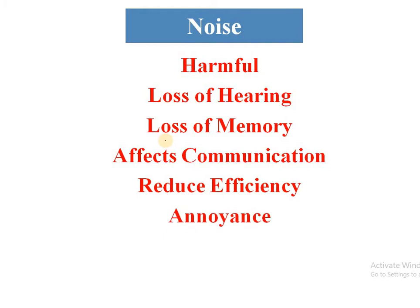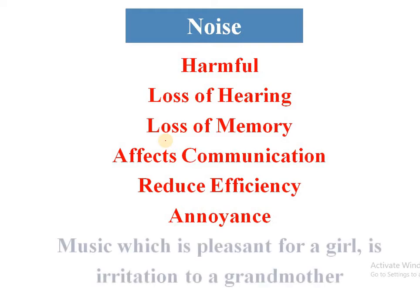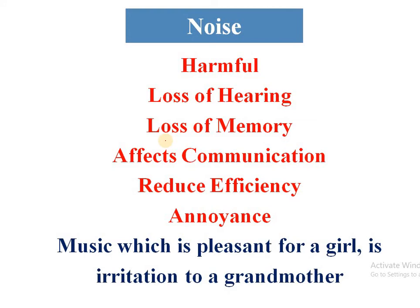Annoyance means irritation, and it's not always the case that the same sound will create irritation for everyone. For example, music which is pleasant for a girl may create irritation for the grandmother due to the age difference. The intensity of hearing the sound changes. So the same sound is irritating for the grandmother but pleasant for the girl. This is how you can understand what noise is.